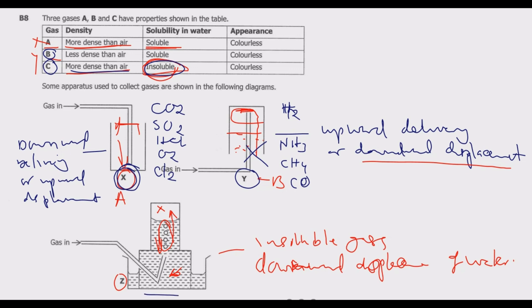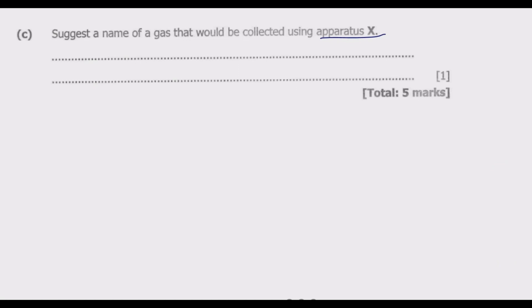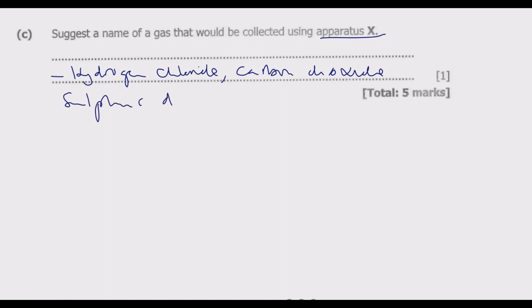For apparatus Z, we are looking for gases that are insoluble in water, such as hydrogen and methane. You can list any of those. The key thing to note is the density: gases denser than air include hydrogen chloride gas, carbon dioxide, and sulfur dioxide, and the method used is the downward delivery method, because the gas has to be denser than air.